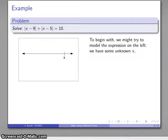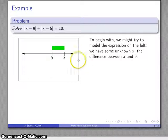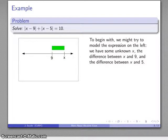We'll model our expression. We have some unknown value x, and the first part of our sum is the difference between x and 9. I don't know where 9 is, but I will imagine for now that x is someplace beyond 9, so 9 is over here someplace. I have the difference between x and 9, and I'll represent that using this bar because I want to do something with these later on.